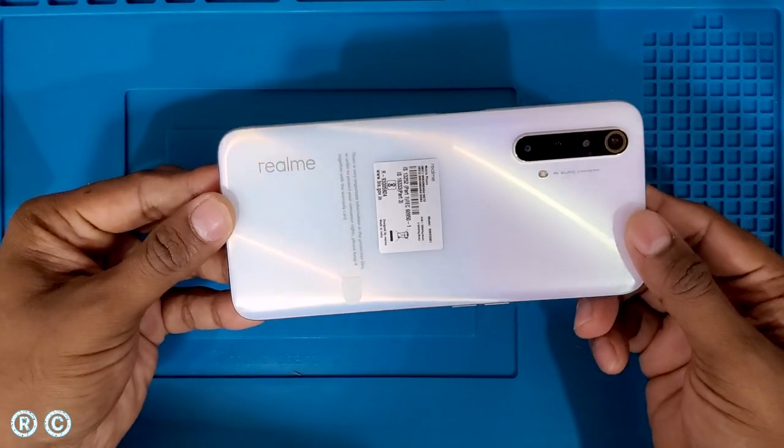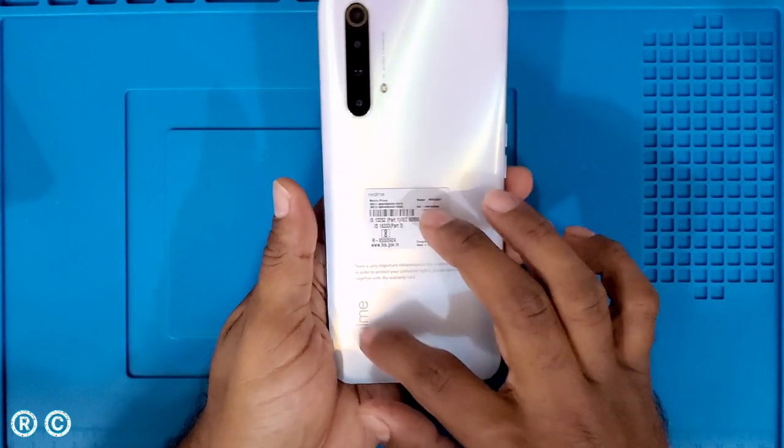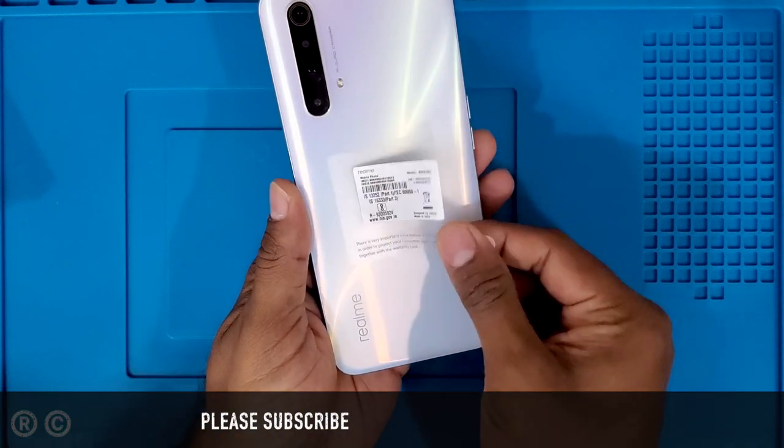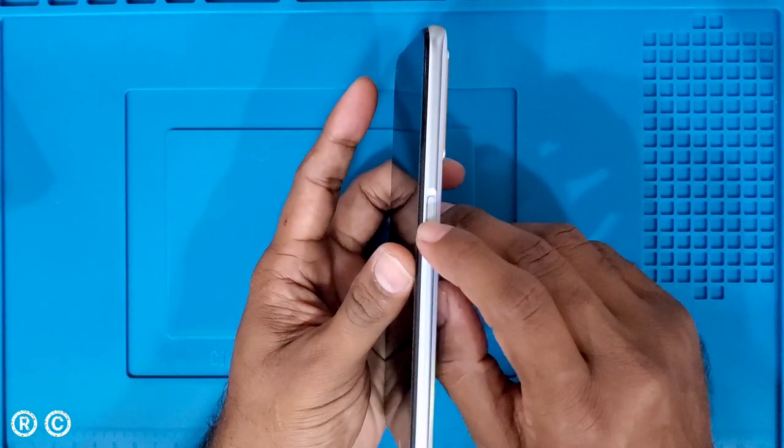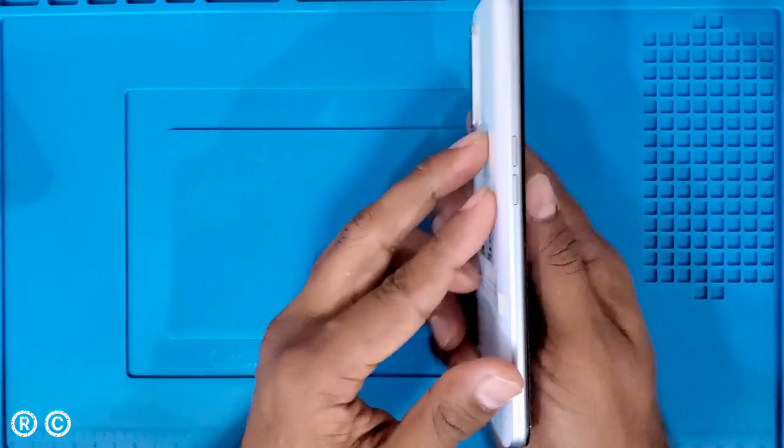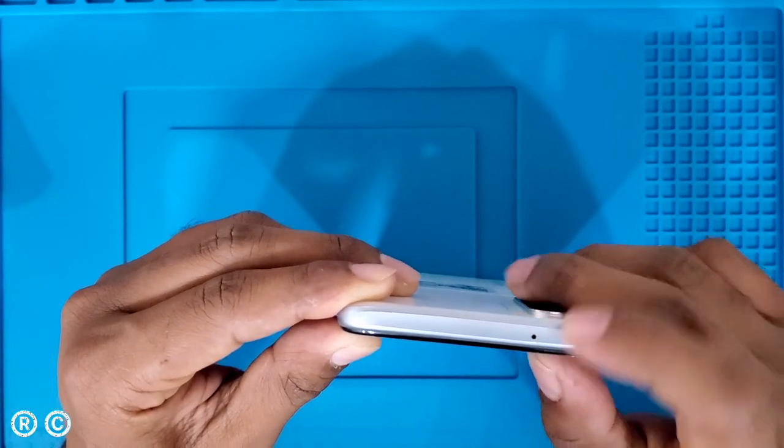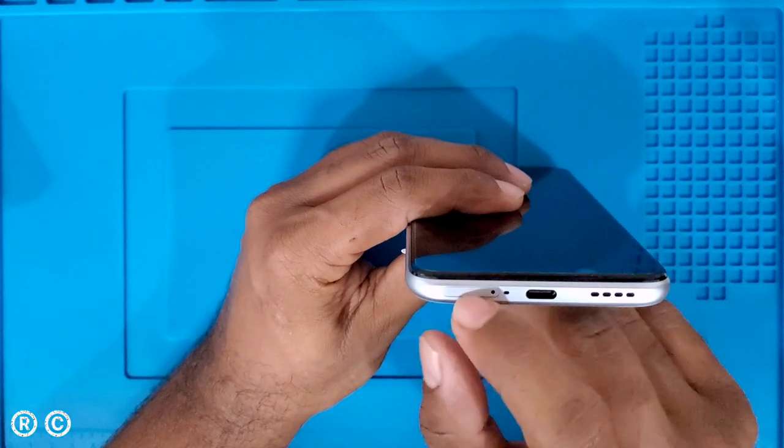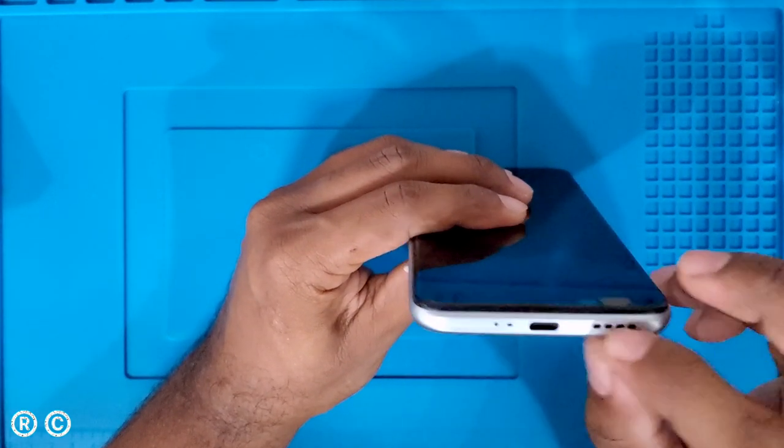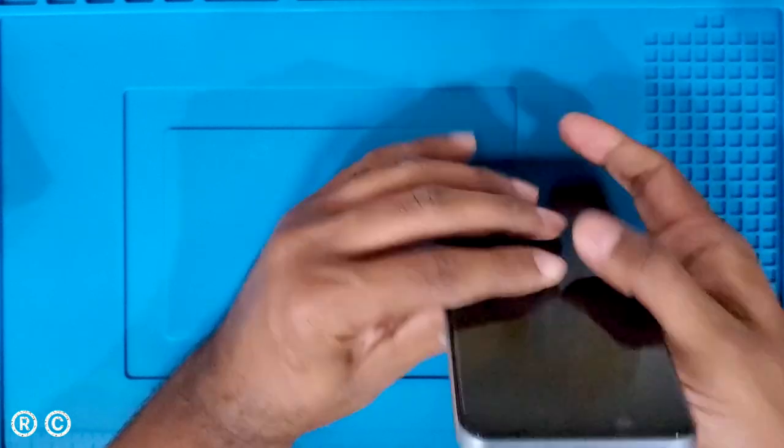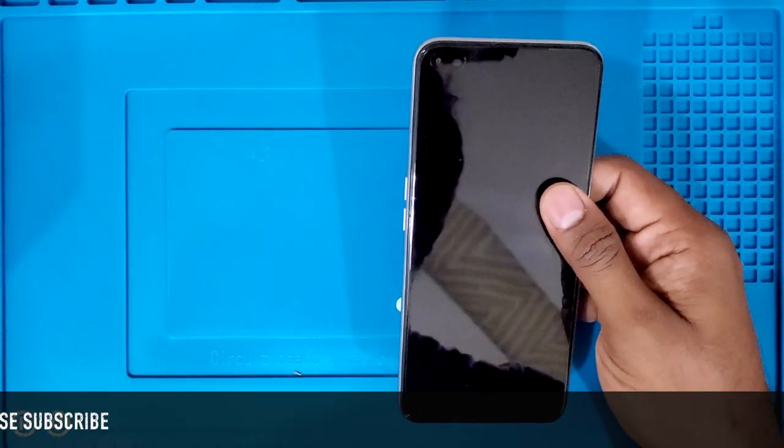Coming to the back side, we get a quad camera setup with flashlight and Realme branding. The IMEI and phone model details are here. On the side, we get the power button with fingerprint scanner together, a microphone, and volume buttons. On the bottom, we have the SIM tray, another microphone, Type-C charging port, and front-firing speakers.